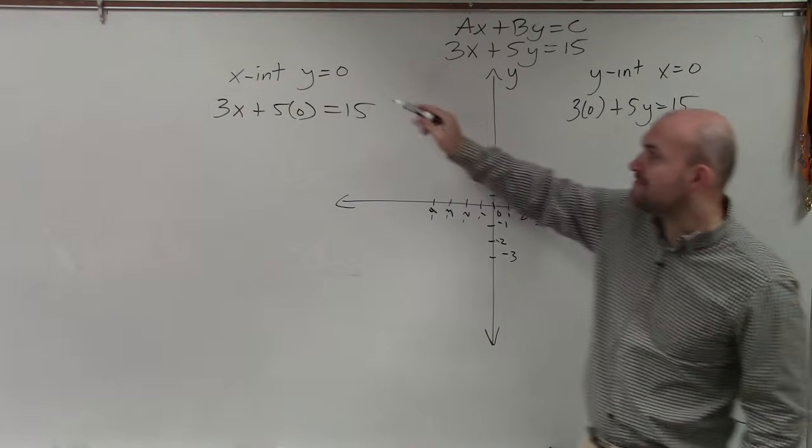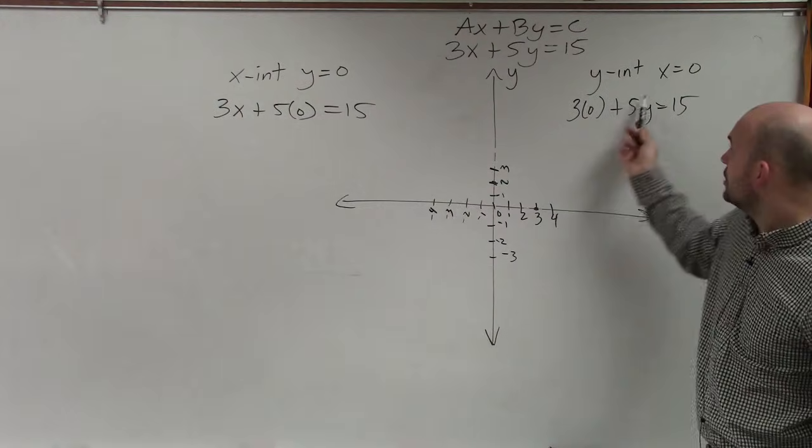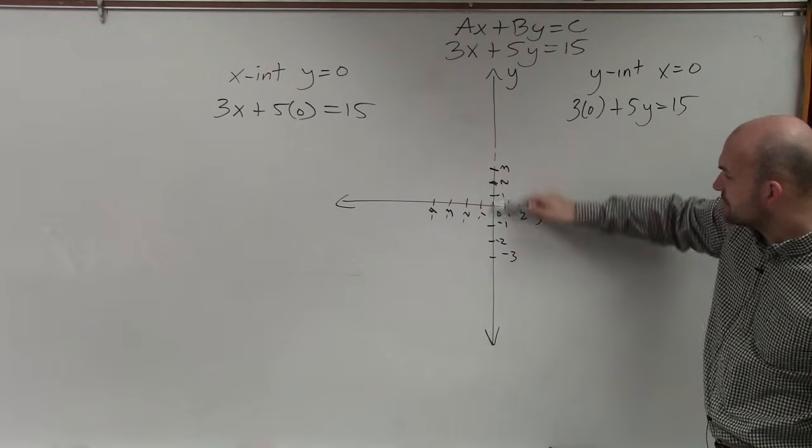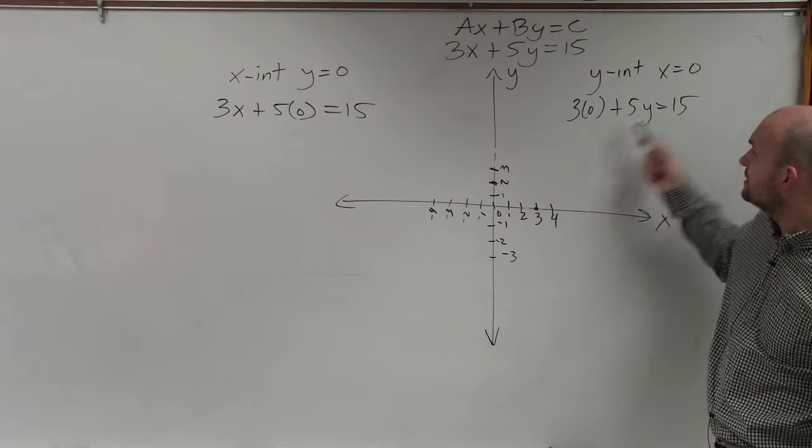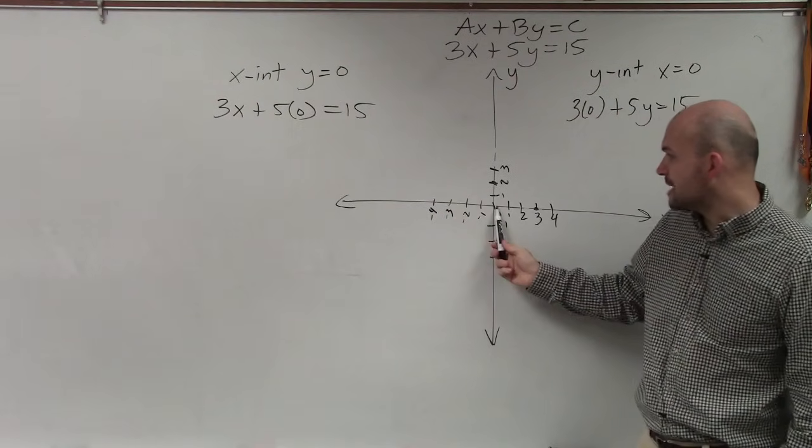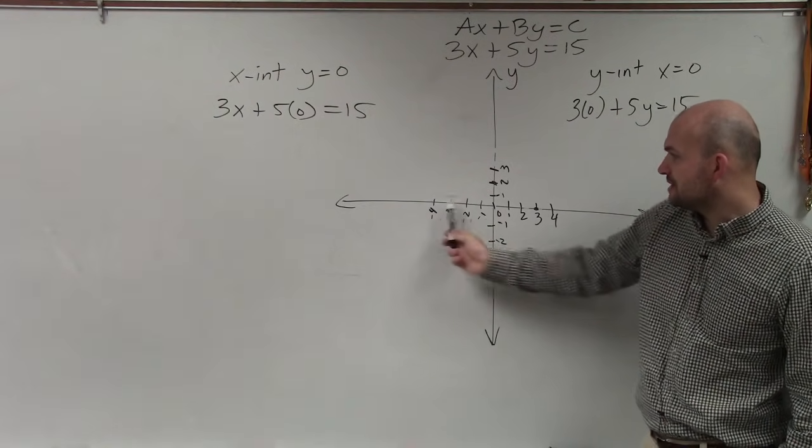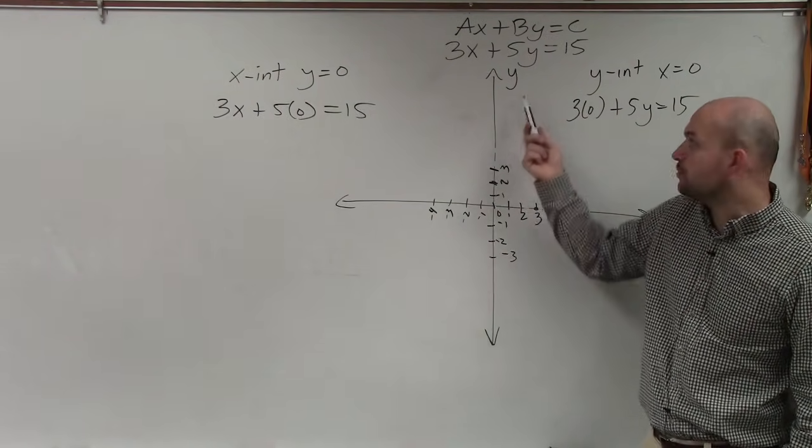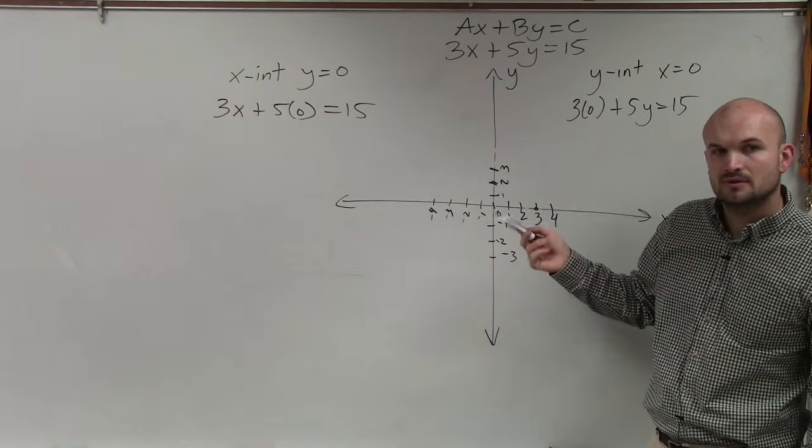So if I'm trying to find the y-intercept where it crosses the y-axis, I'm not moving left or right. That's why x is equal to 0. And the same thing, when I'm trying to find the x-intercept, where this graph crosses here, I haven't gone up or down, so y is going to equal 0.